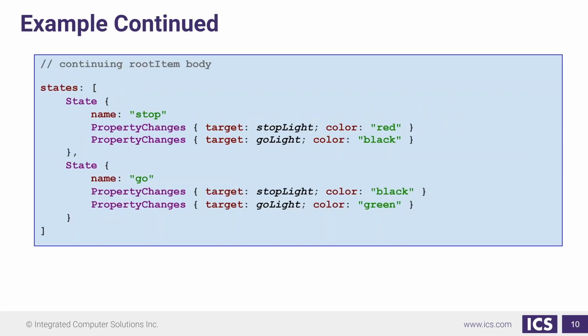Continuing on with our example, we've completed both of our states here. In our stop state, we're going to have two property changes. One is going to target the stop light and one is going to target the go light. The one for the stop light is going to change the stop light's color to red and the one for our go light is going to change its color to black. When we enter this state, those color properties will be applied to those items.